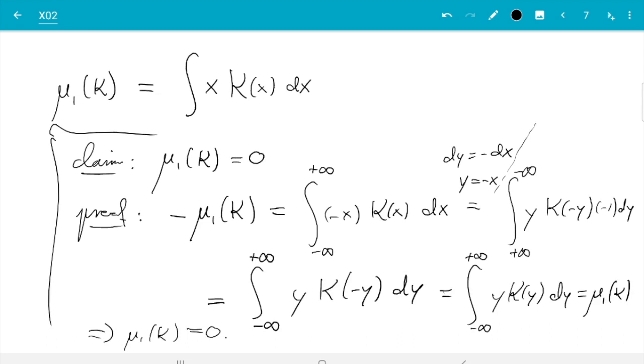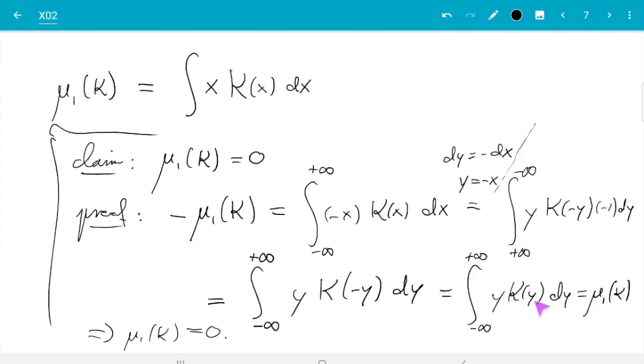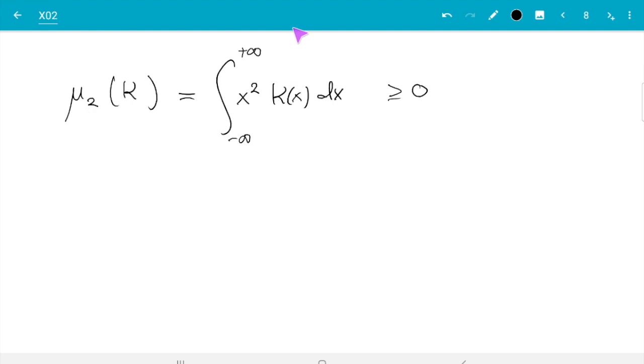So mu1 also does not tell us anything about the kernel. mu0 is always 1, mu1 is always 0. But mu2 is where it starts to be interesting. mu2 of k is integral x squared k of x dx, and there is now no way to simplify this without knowing k. And there is also no way anything is going to cancel because k is positive and x squared is positive. So we know that will be a positive number, and this number we will need later to characterize the error of a kernel density estimate. For now let's just record the fact that this is the first of the moments which tells us anything interesting about k. Then if we would continue, mu3 will be 0 again following the same logic we just used here. And then mu4 would be the next moment which contains information about k. But we are not looking at this level of detail.